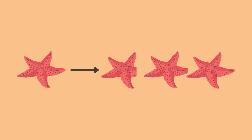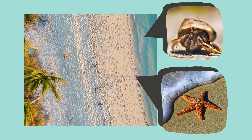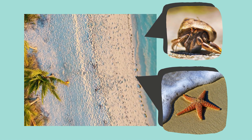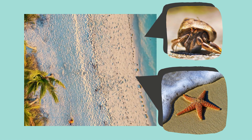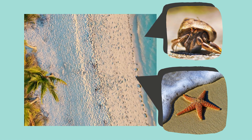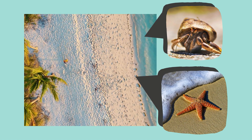Lastly, crustaceans are famous for their wound healing and limb regeneration. An example of this is a starfish replacing its lost arms and a hermit crab regrowing its missing legs or claws by using the process of mitosis.